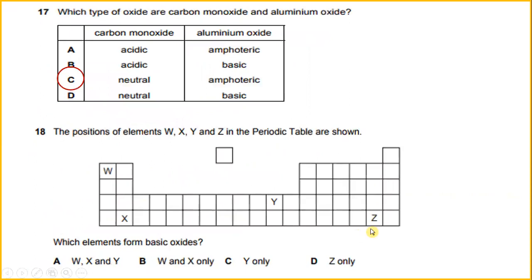Which type of oxide are carbon monoxide and aluminum oxide? So the answer will be carbon monoxide is neutral and aluminum oxide is amphoteric.